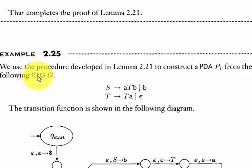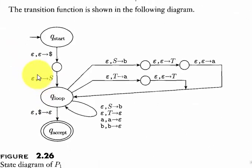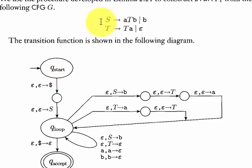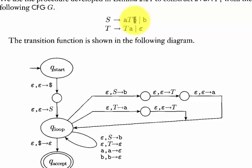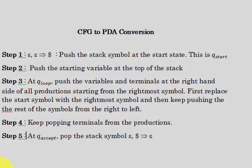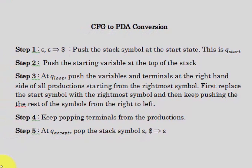Let's look at the example given in the book. The context-free grammar is: S goes to ATB or B, and T goes to TA or epsilon. These are the steps I have revised from the original steps, making it easier. In the original there are three steps; I made it into five to make it compact and understandable for beginners.